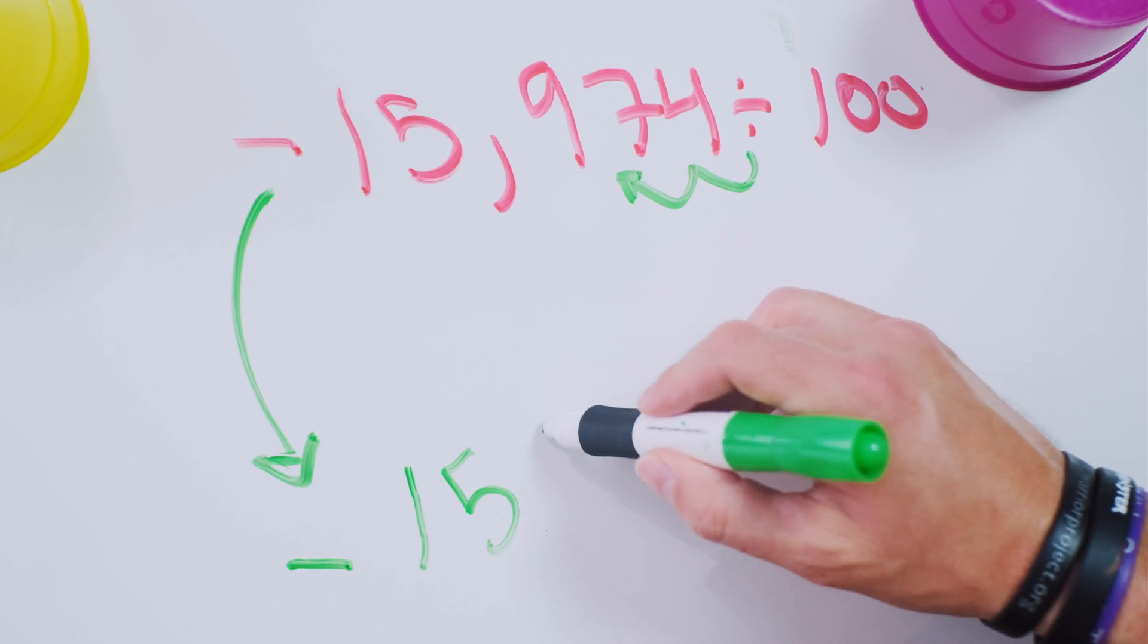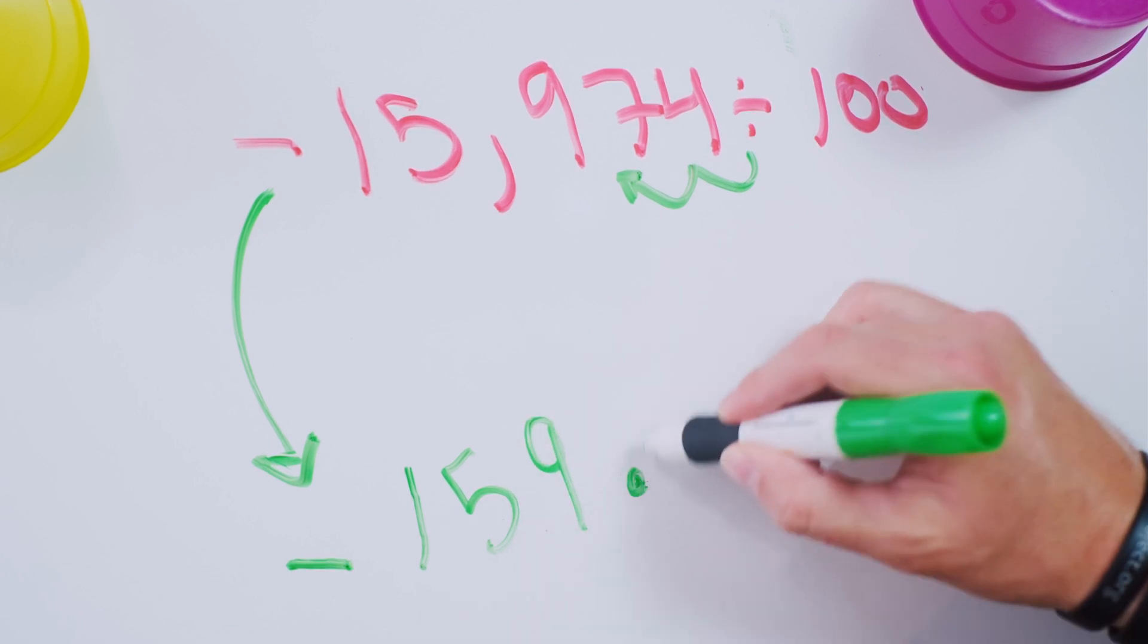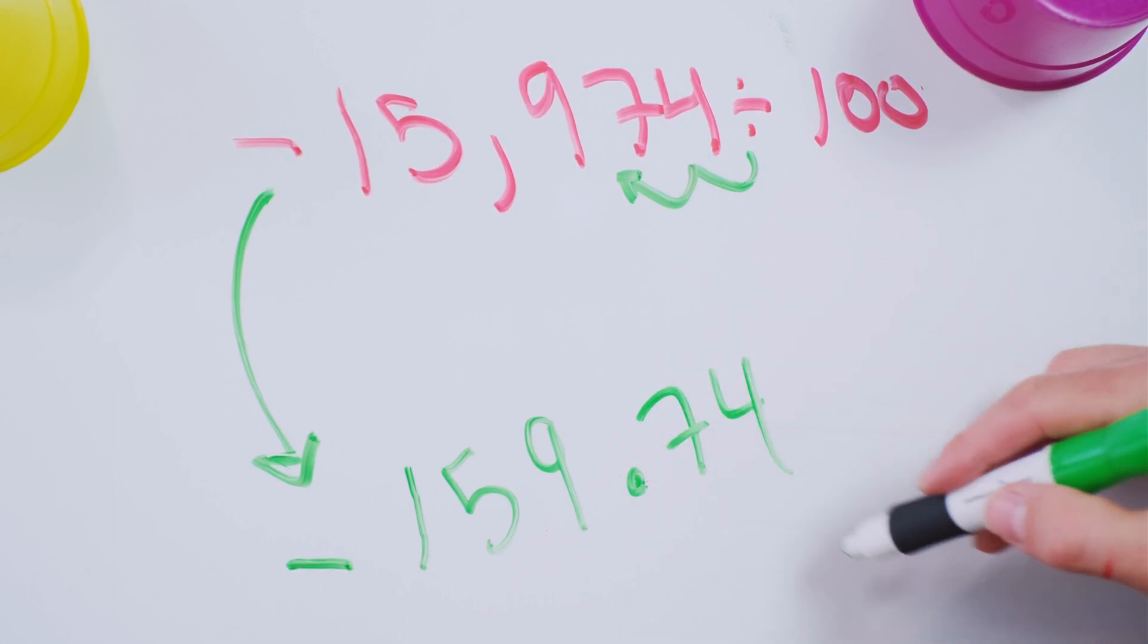Negative 15 with a nine, so that's negative 159.74. That's it.